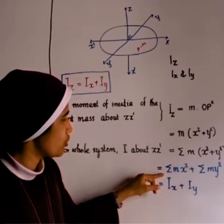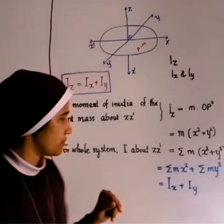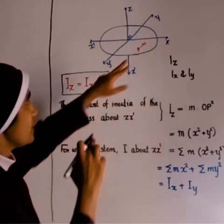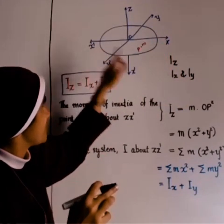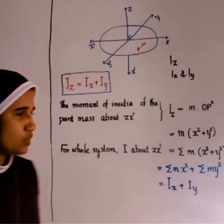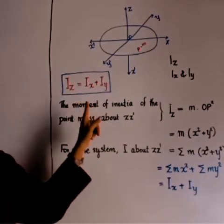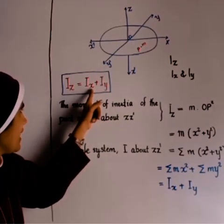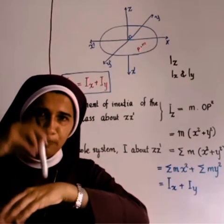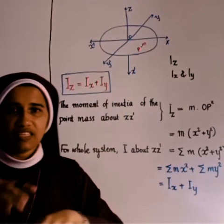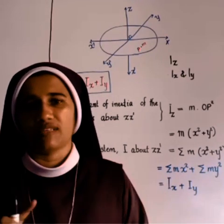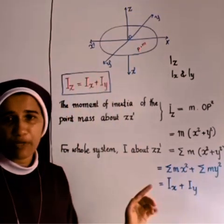We already know that the moment of inertia about axis YY' equals Iy and about XX' equals Ix. Substituting, we get Iz = Ix + Iy. Note that Iz is perpendicular to the plane of the lamina, while Ix and Iy are parallel to the plane and perpendicular to each other. This is the perpendicular axis theorem.